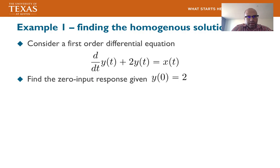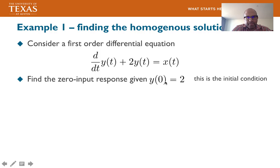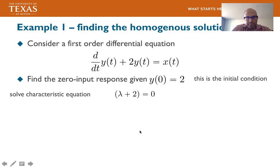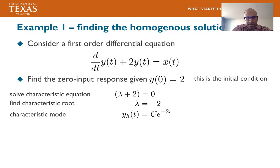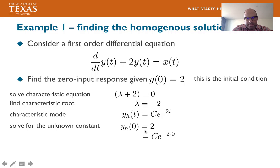Consider the first-order differential equation: dy/dt + 2y(t) = x(t). Find the zero-input response given y(0) = 2. First, solve the characteristic equation: λ + 2 = 0, giving the characteristic root λ = -2. The characteristic mode is c·e^{-2t}. Plugging in t = 0: yh(0) = 2 gives c = 2. Therefore, the homogeneous solution is yh(t) = 2e^{-2t}.